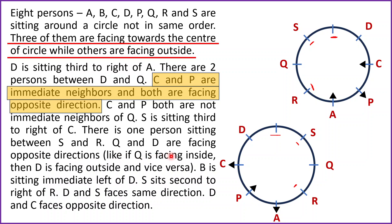Q and D are facing opposite directions — if Q is facing inside then D is facing outside, and vice versa. In Case 1, let's suppose Q is facing inside, then D will be facing outside the center. In Case 2, let's suppose Q is facing outside, then D will be facing inside or towards the center.